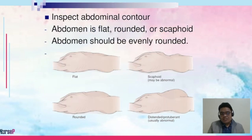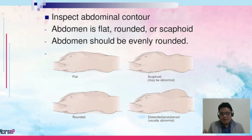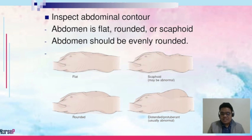We inspect the abdominal contour — whether the abdomen is flat, rounded, or scaphoid, which may still be considered normal. However, if the abdomen appears distended or protuberant, it is usually abnormal. It may signal abnormal deposits of water, which is ascites, or it may signal abnormal growth such as cancer or malignancy.